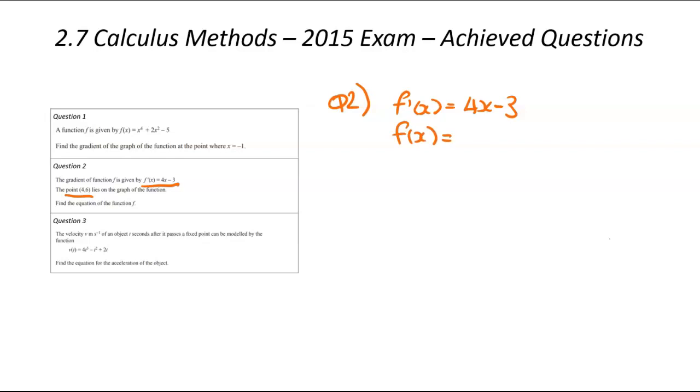Hopefully you remember your integration. Just a reminder, we've got an invisible power of 1 on that x there. So we're going to go the number up front divided by the power plus 1, x to the power plus 1, and then minus 3x plus c. And that plus c is what's going to be annoying in this one. Let's simplify. That's 4 divided by 2, which is 2x² - 3x + c.